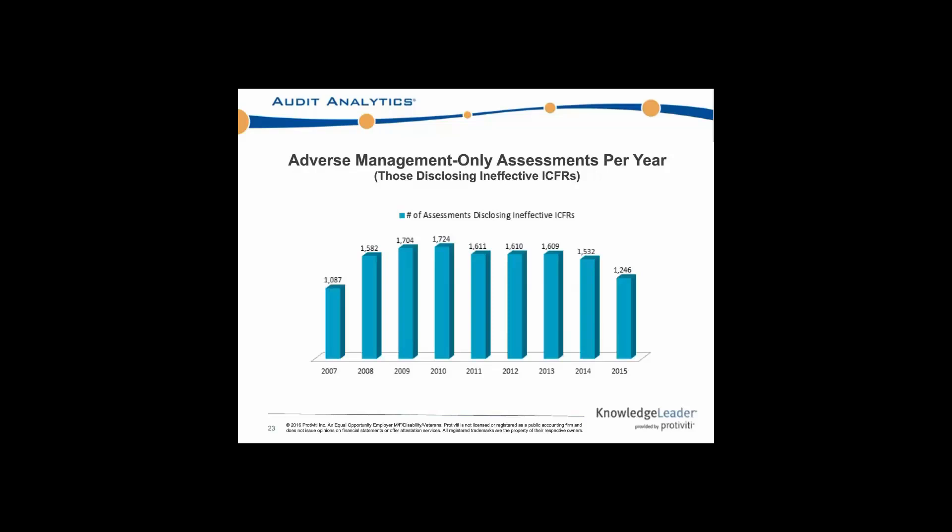Now we get into the adverse management-only assessments. This is more interesting because these are just the smaller companies — they clearly don't have the resources that the larger companies do. It's a much different trend in terms of the total number of these management-only assessments disclosing ineffective ICFRs. As you can see by this chart, it was actually 2010 in which the total number of ineffective ICFRs by management-only peaked. Since then it has been working its way down, though 2011 to 2013 was a pretty steady number.